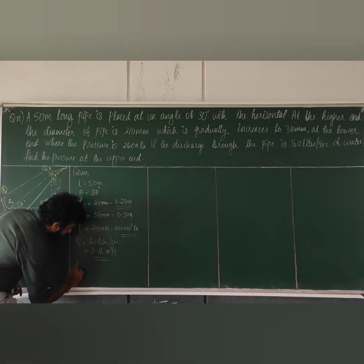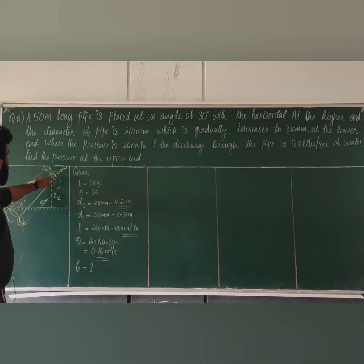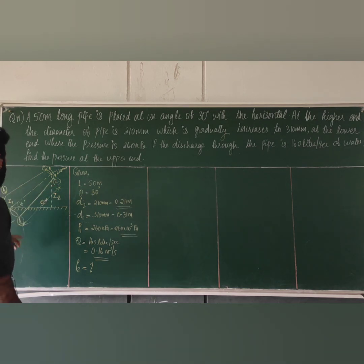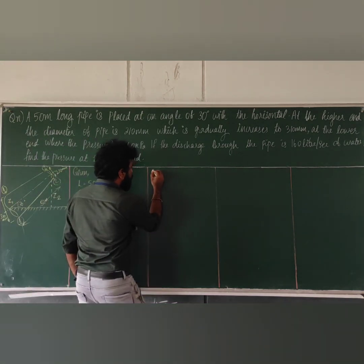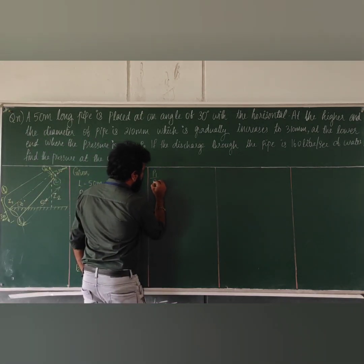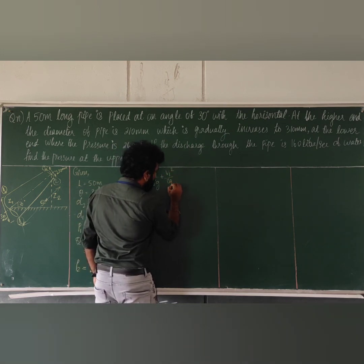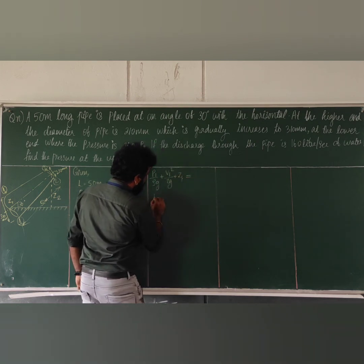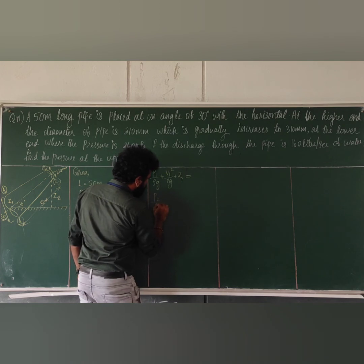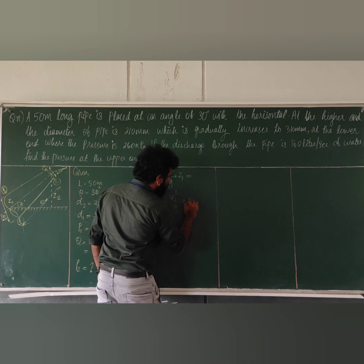We need to find the pressure at the upper end, P2. We use Bernoulli's equation: P1/(ρg) + V1²/(2g) + Z1 = P2/(ρg) + V2²/(2g) + Z2.